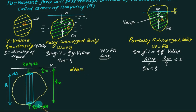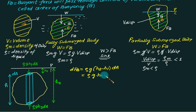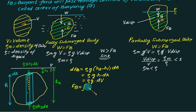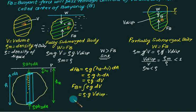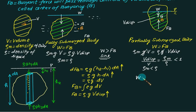The elemental buoyant force is: dFb = (upward force) − (downward force) = ρg(h2 − h1) × dA. Since h2 − h1 = h (the height of the prism), we get dFb = ρ × g × h × dA. Because h × dA equals the elemental volume dV, the total buoyant force is obtained by integrating: Fb = ρ × g × ∫dV = ρ × g × V_displaced. This result holds for both fully and partially submerged bodies, and the buoyant force always acts vertically upward.